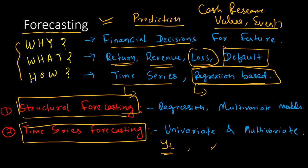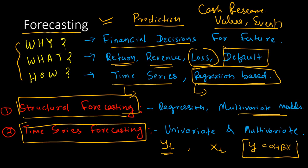Sometimes you use multivariate time series, where you use xt as well. Whereas in a regression-based model, a multivariate model has a functional form like Y = alpha + beta*X, where there is no time component — it's just the cross-sectional component, data for one time period, with multiple variables on the right-hand side as independent variables. These are structural models — linear regression, polynomial regression, and so on. Time series models use the lags of the same variable or the time series components of other independent variables for forecasting.